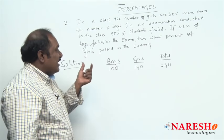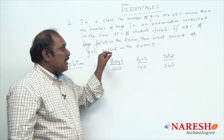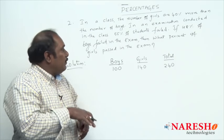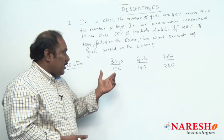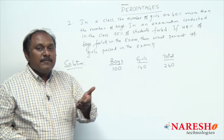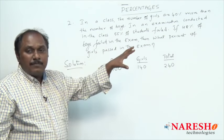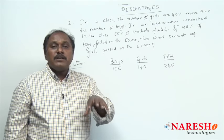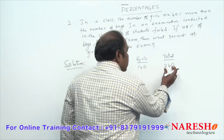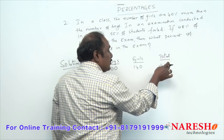Coming back to the question: 55 percent of students failed, so 45 percent of students passed. We are asked to find the percentage of girls passed, so let us start from the passed students. The total number of students is 240, of which 45 percent passed. What is 45 percent of 240? 45/100 × 240. 10 percent of 240 is 24, 5 percent is 12, and 45 percent is 9 times 5 percent, so 12 × 9 = 108. The number of students who passed is 108.